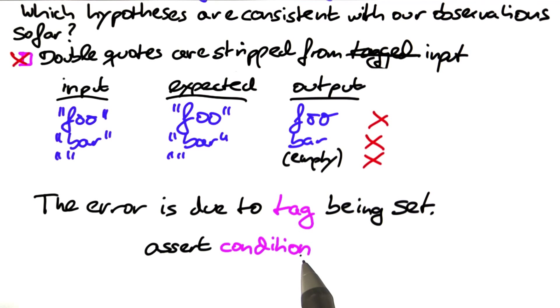With this statement, we can now go and check the value of tag all through the loop. So again, we say in our hypothesis, tag is being set, and we use assert to check that.